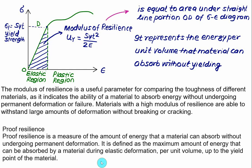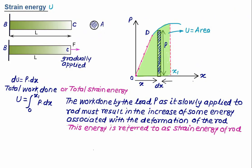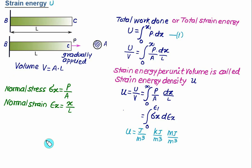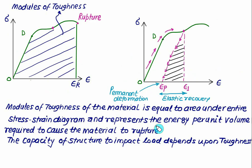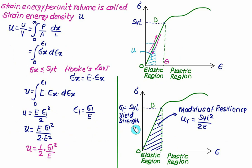In summary: strain energy equals work done, obtained by integrating the product of force and deformation from 0 to x. Strain energy per unit volume is also called strain energy density. The area under the stress-strain diagram up to the rupture point is the modulus of toughness; the area up to yield strength is the modulus of resilience, also called proof resilience. The strain energy formula is u = σ₁²/(2E), which we will use continuously.